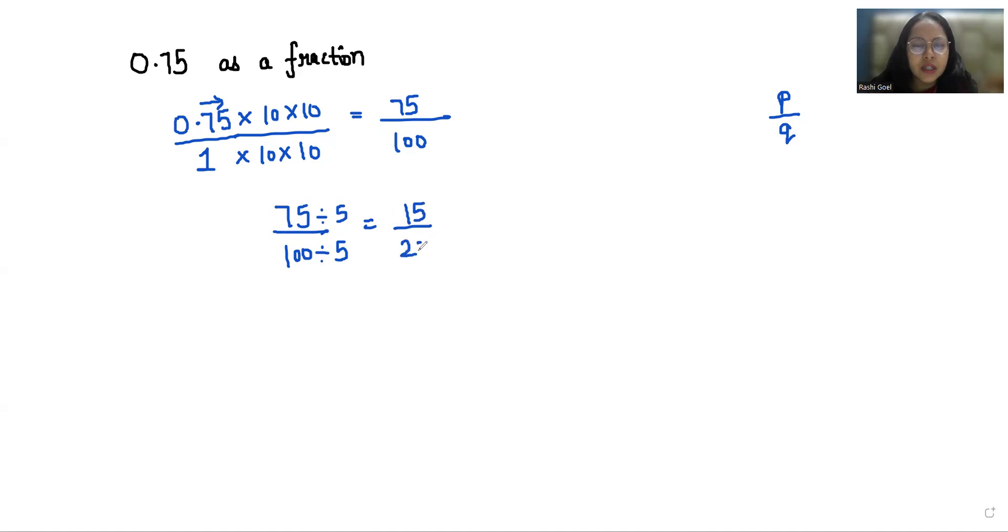Now again I'm going to divide by 5 in numerator and denominator. So this gives us 3 by 4. We can see that 0.75 as a fraction is 3 by 4. I hope it's clear and you find it useful.